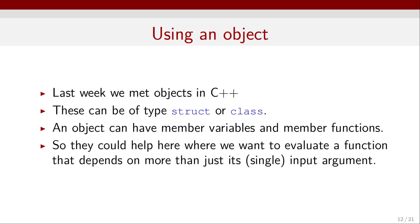So let's look at using an object. Last week we discussed objects in C++, and we mentioned that these can be of type struct, or structure, or class. An object can have member variables and member functions. So they could help here, where we want to evaluate a function that depends on more than just its single input argument.